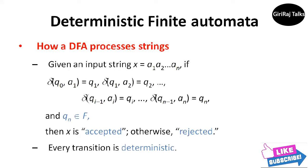We start out with the DFA in its start state q0. Using the transition function delta, we can say that delta of q0 comma a1 equals q1.